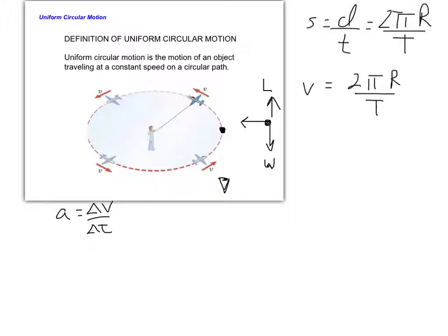At the rightmost point, the tension pulls towards the center of the circle — to the left. On the left side of the circle, tension flips to the right. So we have two issues: we're not sure how to calculate the acceleration since the velocity changes only in direction, and we'll struggle to write x and y Newton's second law equations because tension continuously changes direction.